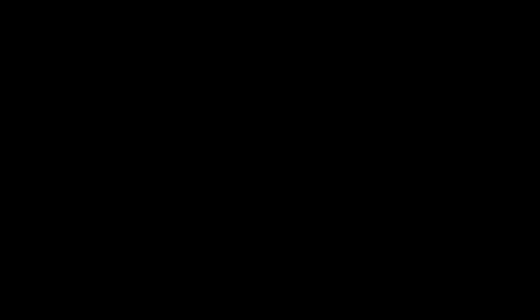So what exactly is an s orbital? An s orbital looks like a sphere. An orbital tells you the probability of finding an electron somewhere within an atom. Electrons can behave as particles and as waves, so an orbital simply tells you the most probable location in which you could find an electron.